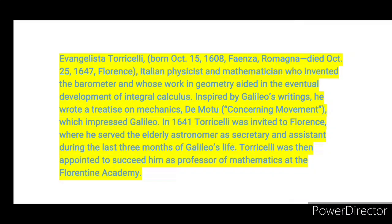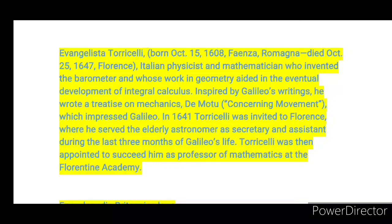Evangelista Torricelli, born 15th October 1608, died 25th October 1647. He was an Italian physicist and mathematician who invented the barometer and worked in geometry, contributing to the eventual development of integral calculus. Inspired by Galileo's writings, he wrote a treatise on mechanics which impressed Galileo. In 1641, Torricelli was invited to Florence, where he served the elderly astronomer as secretary and assistant during the last three months of Galileo's life.